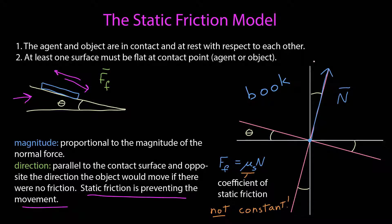We can now put it on the free body diagram. Just like before, the normal force and the static friction force are components of the same contact force. There is a single contact force between the surface and the book, and we're just breaking that contact force into components: one perpendicular to the plane of contact — that's the normal force — and one parallel to the plane of contact.